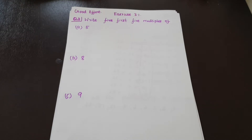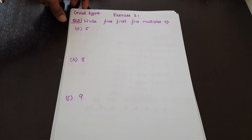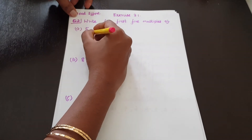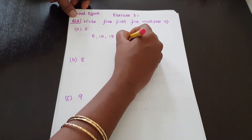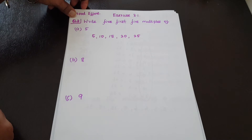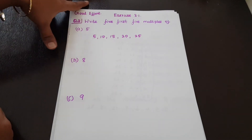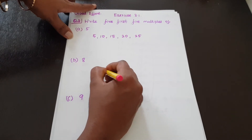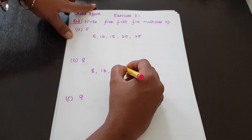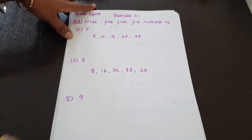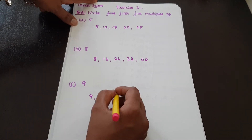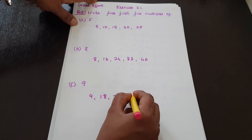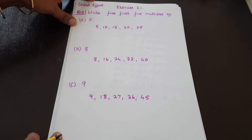Next, Question 2: Write the first 5 multiples of the following numbers. For 5: the first 5 multiples are 5, 10, 15, 20, 25. For 8: 8, 16, 24, 32, 40. For 9: 9, 18, 27, 36, 45.